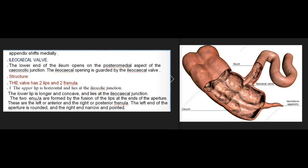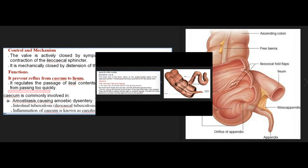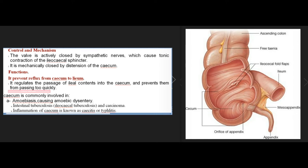The lower end of the ileum opens on the posteromedial aspect of the cecocolic junction. The ileocecal opening is guarded by the ileocecal valve, which has two lips and two frenula. The upper lip is horizontal at the iliocolic junction; the lower lip is longer and concave at the ileocecal junction. The two frenula are formed by fusion of the lips at the ends of the aperture — the left or anterior and the right or posterior frenula. The valve is actively closed by sympathetic nerves causing tonic contraction of the ileocecal sphincter, and mechanically closed by distension of the cecum.